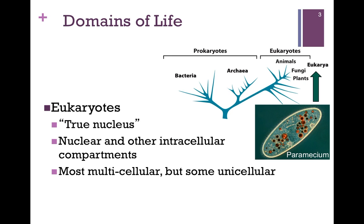Eukaryotes literally means true nucleus. The distinguishing characteristic of these organisms is the presence of a nucleus and other intracellular compartments. This group would include plants, fungi, and animals such as ourselves.